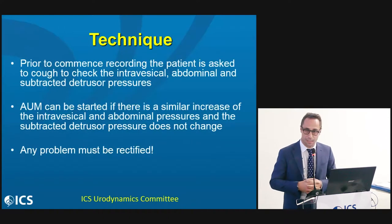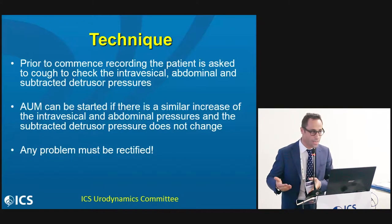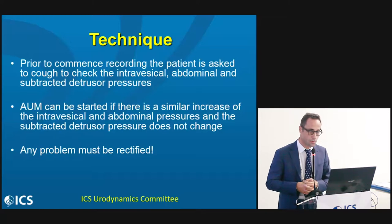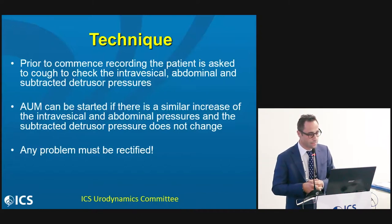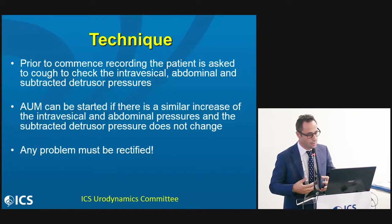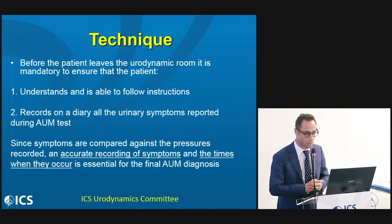After setting the zero, before starting pressure recording, we need to check whether the pressures we are recording are accurate and whether the subtraction is good. Therefore, we ask the patient to cough — the same way as during routine cystometry. If there is a similar increase in intravesical and abdominal pressure, then the subtraction is good and AUM can be started. If there is any problem, we must rectify it before starting recording.